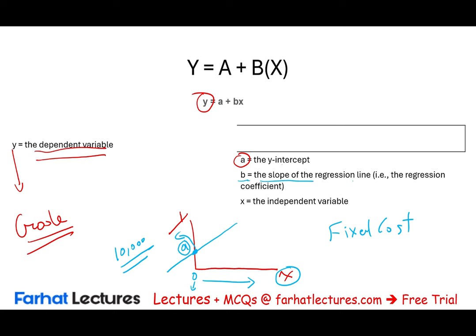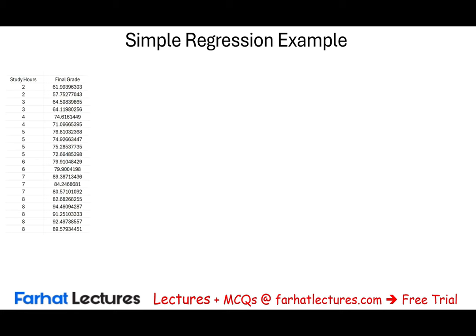b is the slope of the regression line — rise over run. This is what we need to compute. And x is the independent variable; here the independent variable is study hours. So we need to find the slope b and the y-intercept a. To do so, we take a bunch of data like study hours paired with final grades.